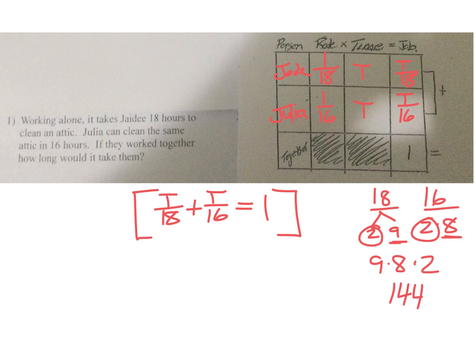I'm going to take this whole equation and multiply it by 144. 18 goes into 144 eight times, 16 goes into 144 nine times, and 144 times 1 is 144. I combine those, and that gives me 17T equals 144.